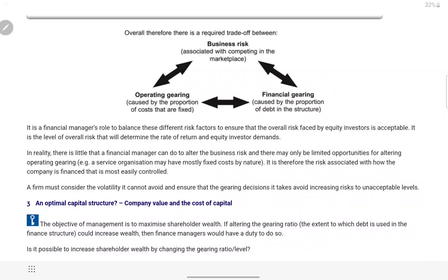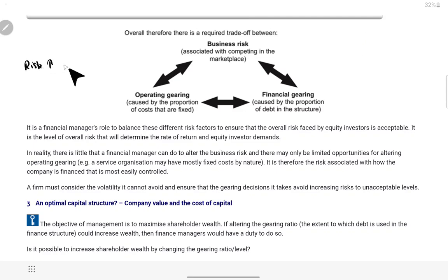Hi guys, I hope you all are doing very well. In this video we will be covering the next part of Chapter 18 of ACCA F9, and the name of the chapter is Capital Structure. So guys, ab tak humne padhi thi operating gearing ratio aur humne padhi thi financial gearing, jis se humne padha tha ki agar humare fixed expenses bahut zyada hon aur gearing bahut zyada high ho toh business ke liye bahut risky hota hai.